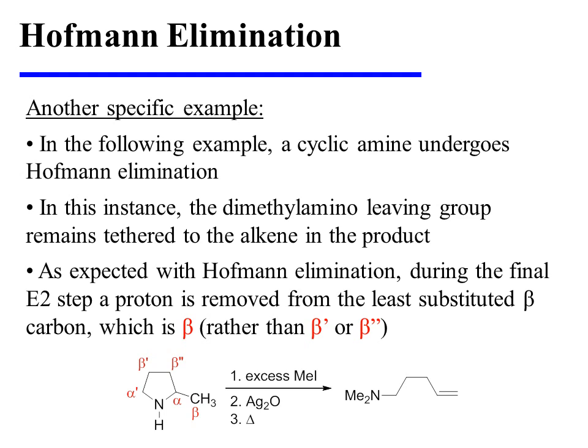In the following example, a cyclic amine undergoes Hoffman elimination. In this instance, the dimethylamino leaving group remains tethered to the alkene in the product. As expected with Hoffman elimination, during the final E2 step, a proton is removed from the least substituted beta carbon, which is beta rather than beta prime or beta double prime in this example.